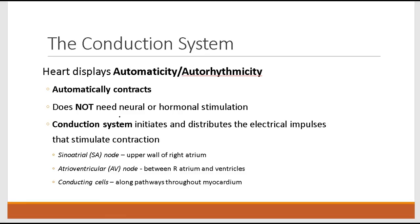The conduction system includes the cells of the sinoatrial node, found in the upper wall of the right atrium, the atrioventricular node found at the base of the right atrium between the right atrium and the ventricles, and numerous different conducting pathways with conducting cells scattered throughout the myocardium of both the atria and the ventricles.